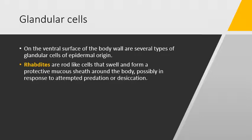The first one is the rhabdites. Rhabdites are rod-like cells found between the epidermis, and they swell and form a protective mucus sheath around the body. They secrete mucus for two reasons. First one is for escape from the predator, and its mucus gives the body a slimy appearance so it can slip from the hands of the predator.